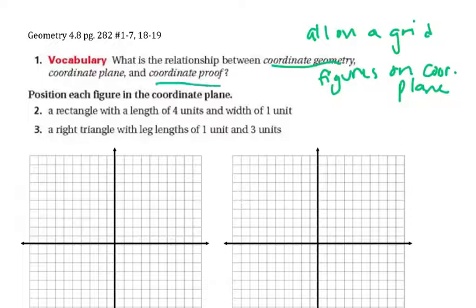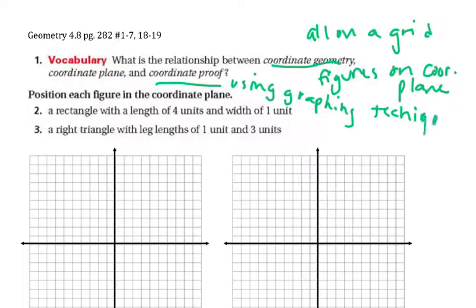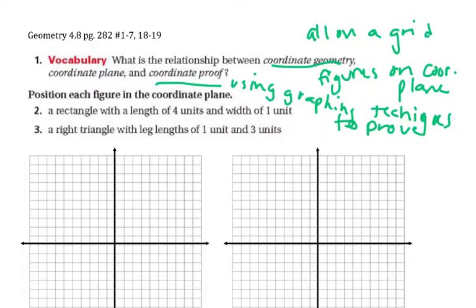A coordinate proof ends up using these graphing techniques to prove things. For instance, a midpoint formula, which you wouldn't have in any other scenario where it's just a blank screen with a shape on top. It's actually kind of cool because you can find all of the lengths even though maybe the proof doesn't give you them — you can use your math to find it.